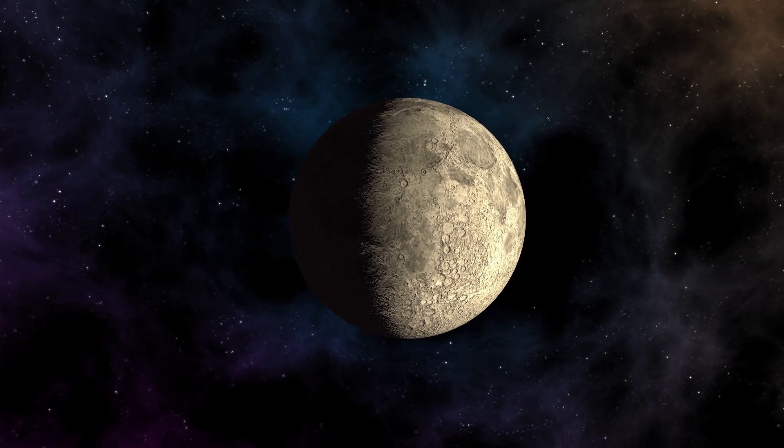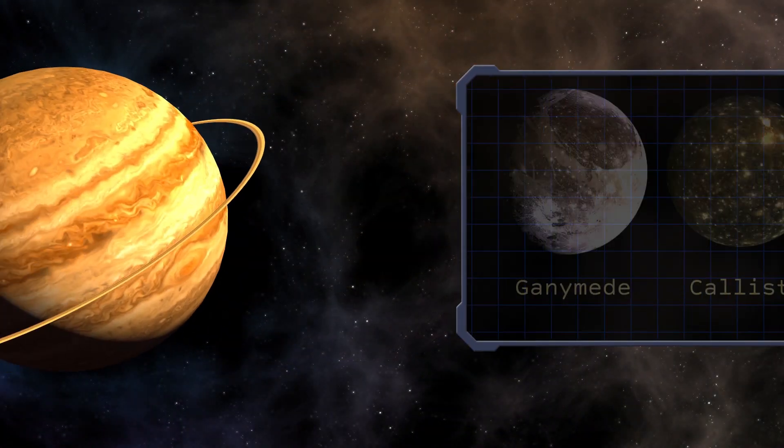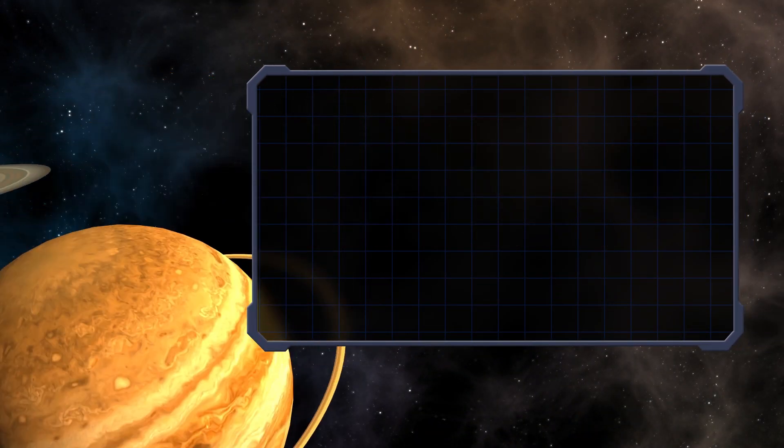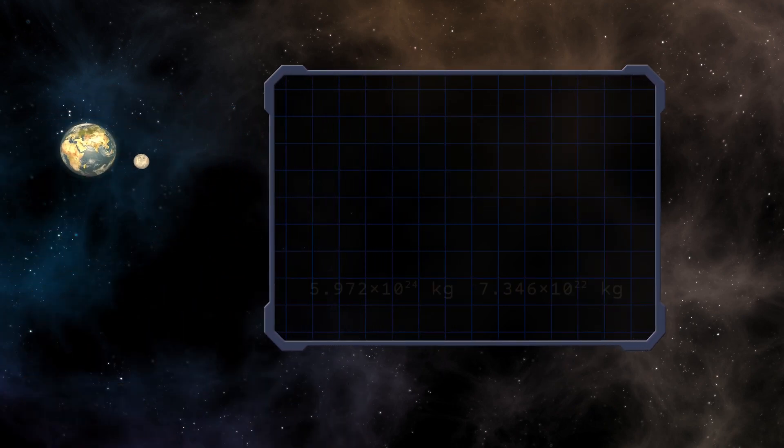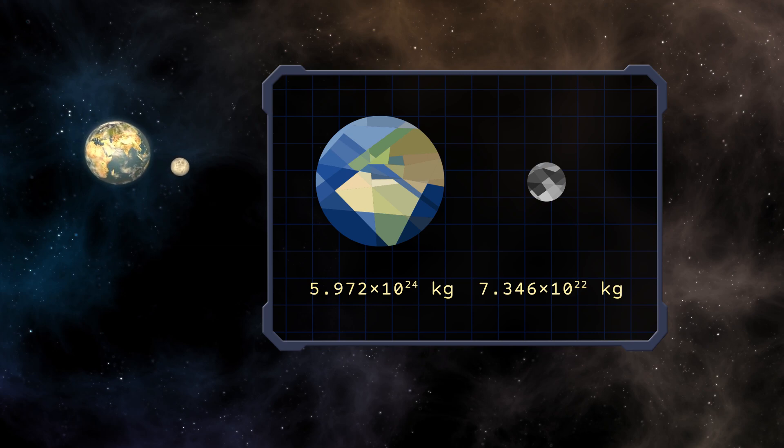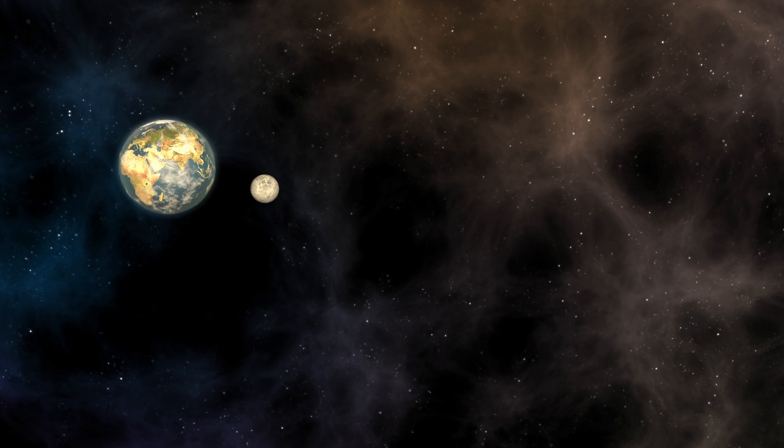Our celestial companion is one of the largest moons in the solar system. Only three of Jupiter's Galilean moons and Saturn's largest moon, Titan, precede it. Since it is definitely the largest moon regarding its mass ratio to its planet, it has a great dynamic impact on Earth.